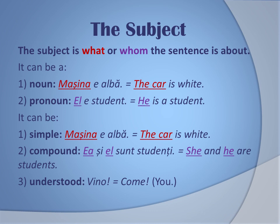You can have a simple subject as in 'mașina e albă', a compound subject as in 'ea și el sunt studenți' — she and he are students — even though in English you can just say 'they are students', or in Romanian 'ei sunt studenți'. And another type is where the subject is understood rather than expressed, like 'vino', which means 'come', as in 'you come here'.